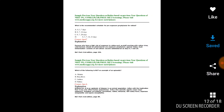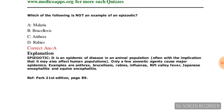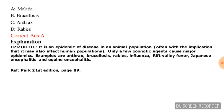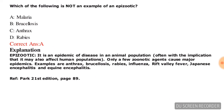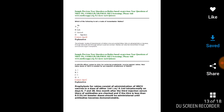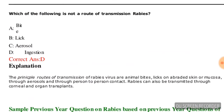Next question: which of the following is NOT an example of a zoonotic disease? Options are: malaria, brucellosis, anthrax, or rabies. The correct answer is malaria — malaria is not a zoonotic disease.